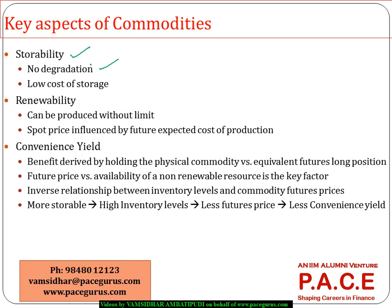Another specific feature of commodities is renewability — can the same product be produced again and again? For example, a crop: seeds give rise to a crop, and from that crop new seeds emerge which can be used to regenerate the crop. This cyclical process means such products are called renewable commodities.